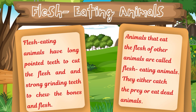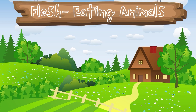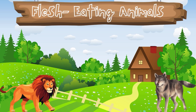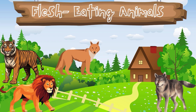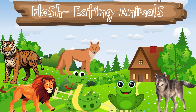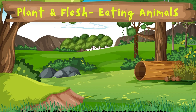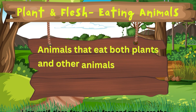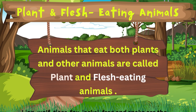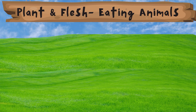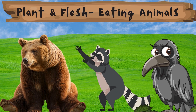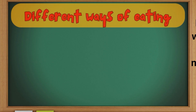They use their teeth to chew bones and flesh. Lion, wolf, tiger, jackal, frog, and snake are examples of flesh-eating animals. Animals that eat both plants and other animals are called plant and flesh-eating animals. Bear, raccoon, and crow are some examples of such animals.